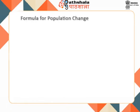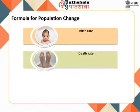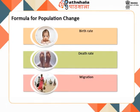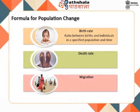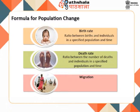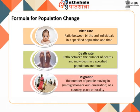The main factors affecting population change are the birth rate, death rate, and migration. The birth rate is the ratio between births and individuals in a specified population and time. Migration is the number of people moving into — immigration — or out of a country, place, or locality.